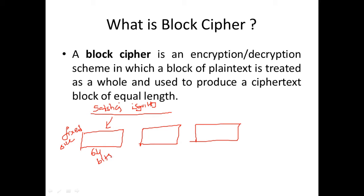Each block is of a fixed size. You can consider each block to be 64 bits, so each block is 64 bits. The block size can vary — it can also be 128 bits or 256 bits. So if you take a block size of 64 bits, each block should be exactly 64 bits.